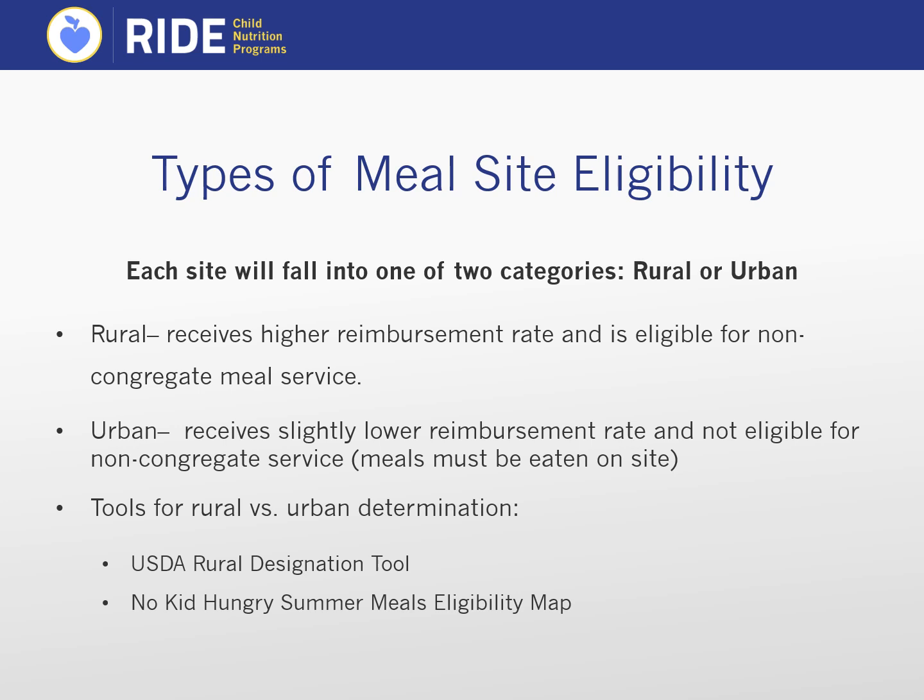One category of eligibility that will need to be determined is whether a site is located in an area considered urban or rural. Any site determined to be in a rural setting as defined by the USDA will receive a higher reimbursement amount per meal. Rural sites are also eligible to operate a non-congregate meal service, allowing the site to prepare and distribute meals intended to be eaten off-site, and sponsors can elect to serve multiple meals or multiple days' worth of food at once. Sponsors can check whether their site is rural or urban through the USDA Rural Designation Tool or the No Kid Hungry Summer Meals Eligibility Map. Urban sites receive a slightly lower reimbursement rate and cannot operate a non-congregate meal service.